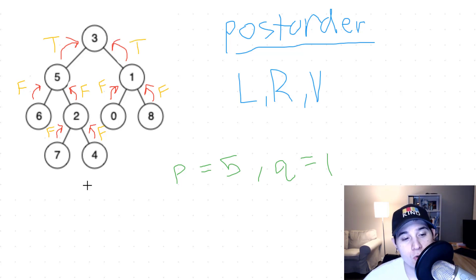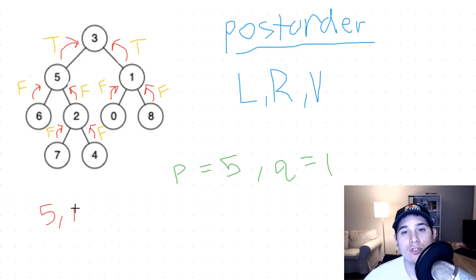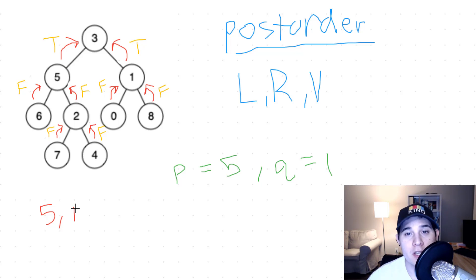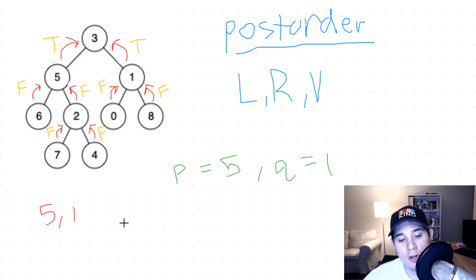Now we get to a point in our traversal where the current node's subtree has at least two trues below it — we have five and one. We don't need to care about where these nodes are; we just need to know that there were at least two trues in the subtree, because we know all nodes in our tree are unique. So as long as we have two trues, we know we've seen both P and Q. So when we return in the recursive call for node three, we determine that node three is our least common ancestor.